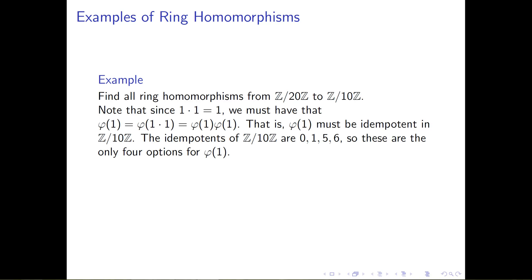Now, let's do one more very specific example. This example will be nice for us in many ways, because what we're going to do is look at all ring homomorphisms from ℤ mod 20 to ℤ mod 10.